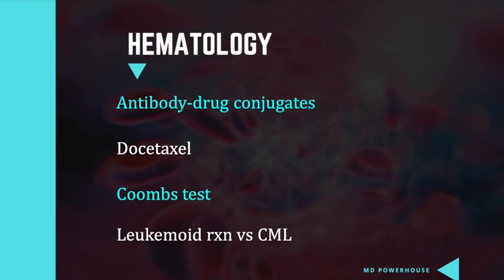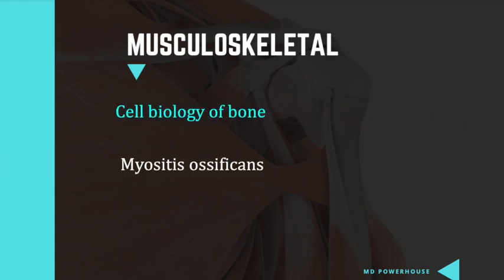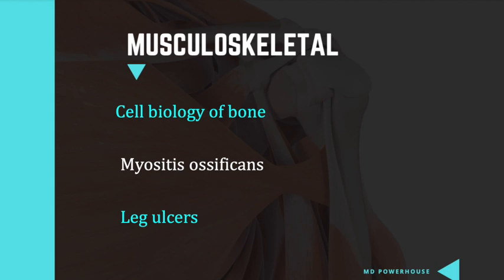In the musculoskeletal system, they added the cell biology of bone, myositis ossificans, and leg ulcers. I'm curious — what do you think about all the changes and updates in the 2021 version of First Aid for the USMLE Step 1? Let me know in the comment section below.